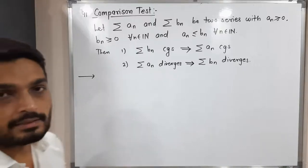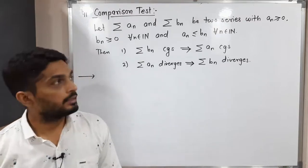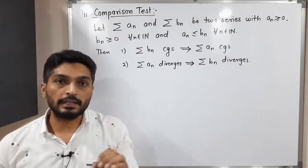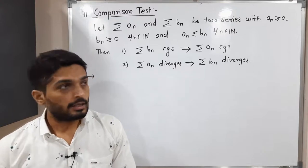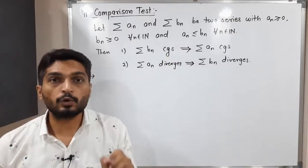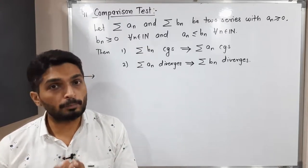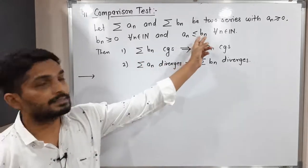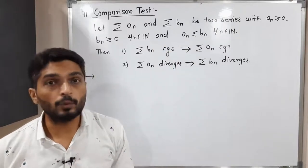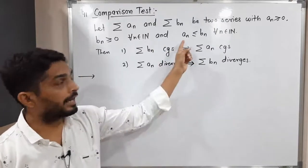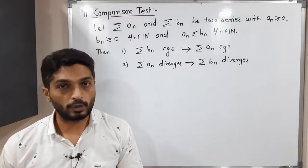Let us discuss the Comparison Test. We have two series aₙ and bₙ, where aₙ ≥ 0 and bₙ ≥ 0 — that means they are series of non-negative terms. The given condition is that aₙ ≤ bₙ for all n in the natural numbers. We have to prove: if summation bₙ is convergent then summation aₙ is also convergent, and if summation aₙ is divergent then summation bₙ is also divergent.